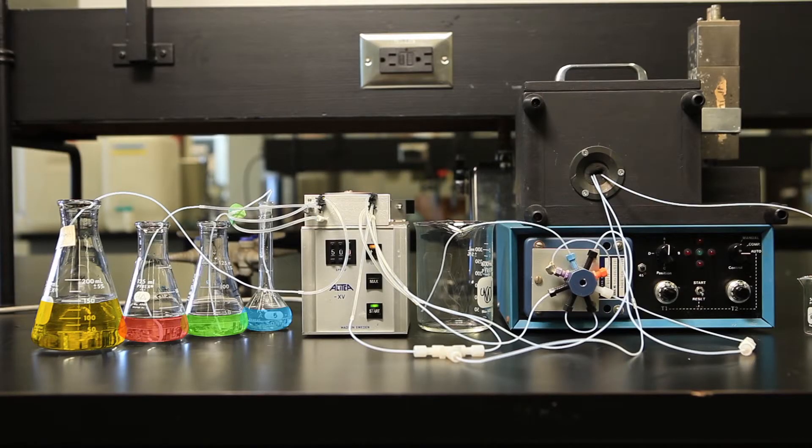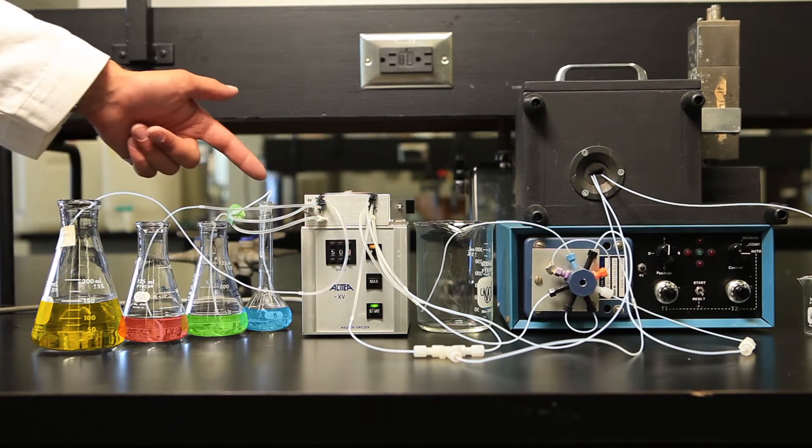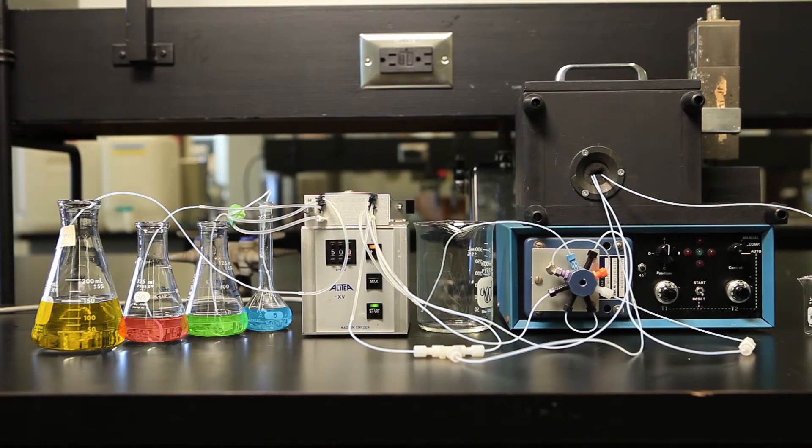Next, we'll look at the setup for flow injection analysis. The sample and reagents are pumped into the instrument through these inlet tubes. Here, we're animating the pumping of colored solutions so you can see what's happening. However, in the experiment, the solutions are colorless.